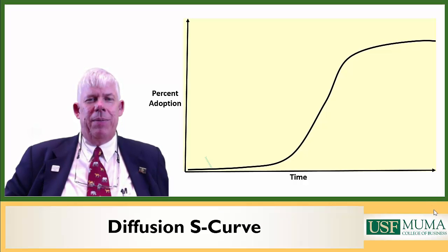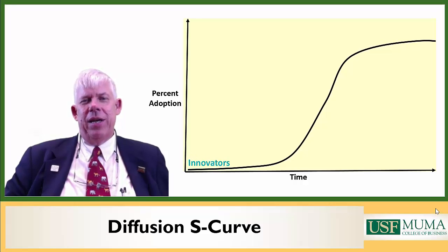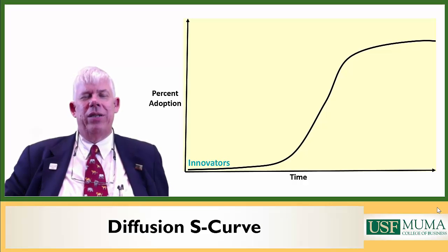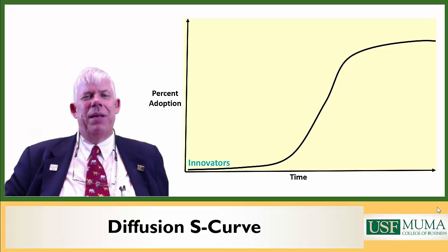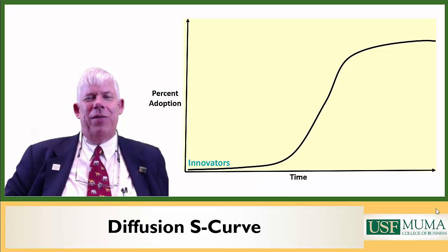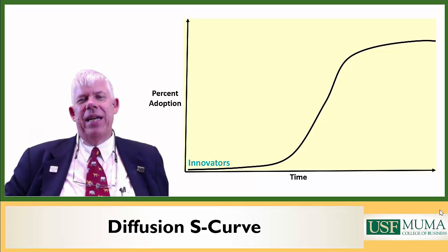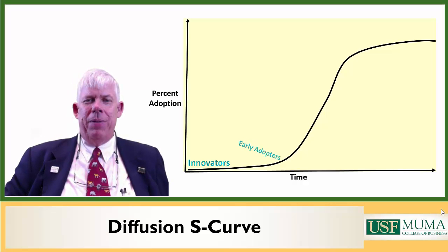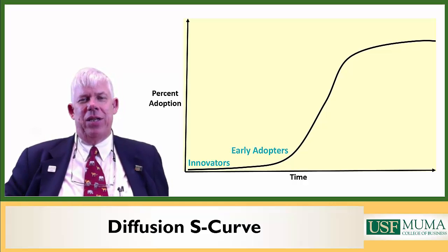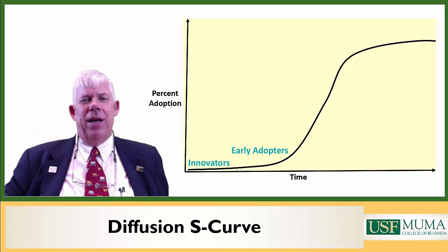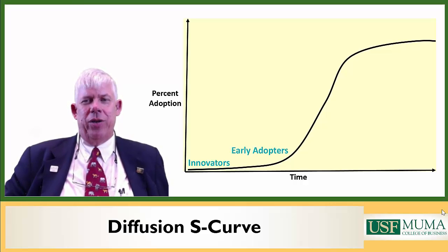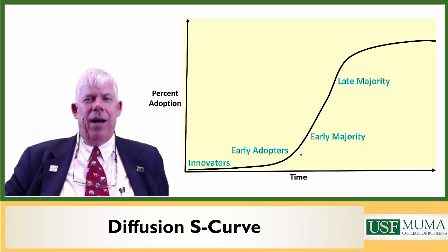If we imagine a large population and we imagine time, as a useful innovation is introduced, it tends to go through what is called an S-curve, because it looks a little like an S. Each region of the curve tends to be dominated by different individuals. At the beginning of the curve, we have what are known as the innovators. If you've got an innovation, innovators are going to be willing to try it pretty much without any evidence, because they're intrinsically motivated to try new things.